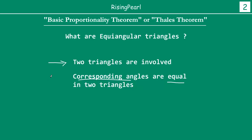So, two triangles, and this must be absolutely true: corresponding angles must be equal. The word equiangular — 'equi' means equal and 'angular' means angles. So equiangular means equal angles. Now let's look at some triangles where we can actually draw equiangular triangles.